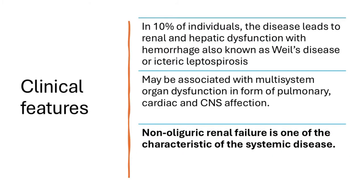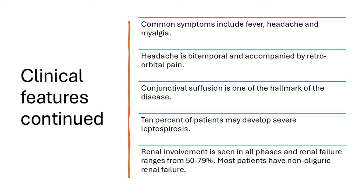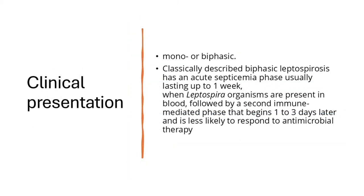In 10% of individuals, leptospirosis can cause renal and liver dysfunction with hemorrhage — known as Weil's disease or icteric leptospirosis. Severe leptospirosis can cause multi-system organ dysfunction involving pulmonary, cardiac, or CNS systems. Non-oliguric renal failure is characteristic of the systemic disease. Common symptoms include fever, headache, myalgia; the headache is classically bitemporal with retroorbital pain. Conjunctivitis is a hallmark. Renal failure is seen in all phases and can range from 50–79% of cases.